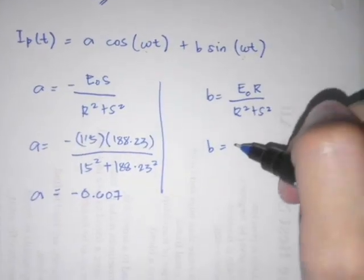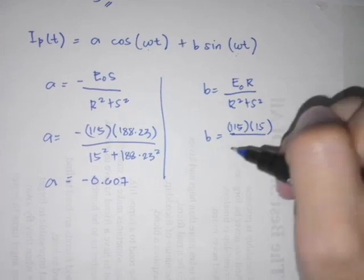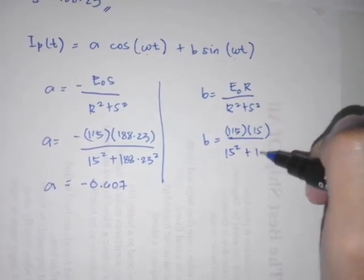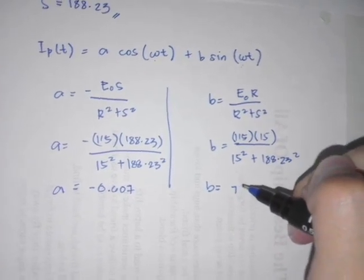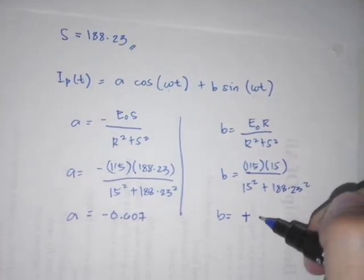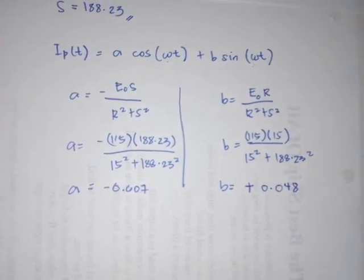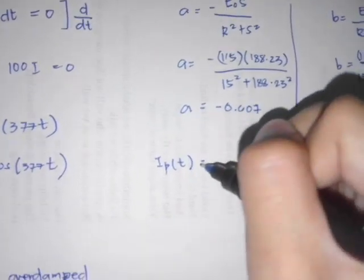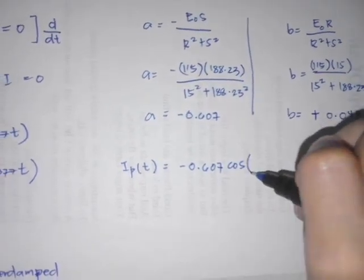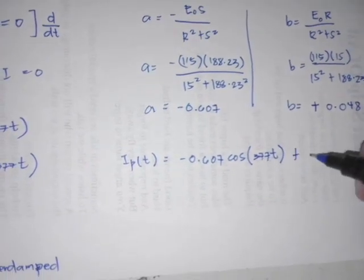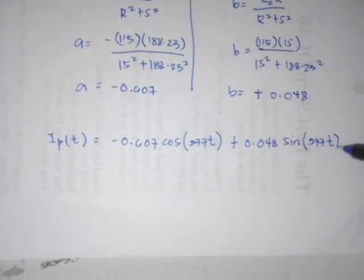For B: B equals E0 times R over (R squared plus S squared). With E0 = 115 and R = 15, we have 115 times 15 over (15 squared plus 188.23 squared), giving B equals positive 0.048. So the particular solution is: negative 0.607 cosine(377T) plus 0.048 sine(377T).